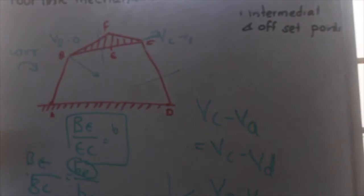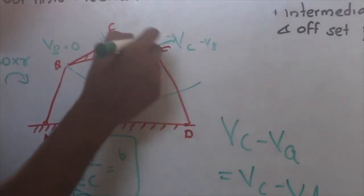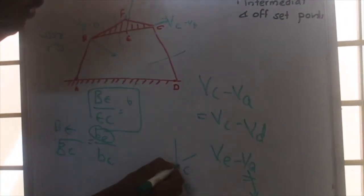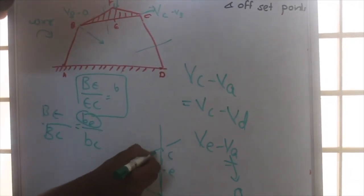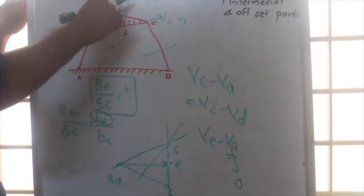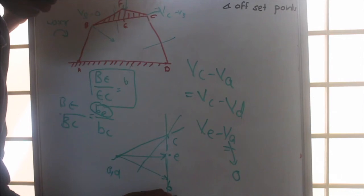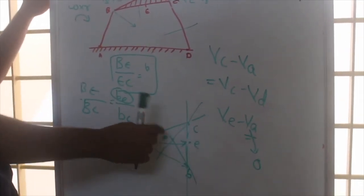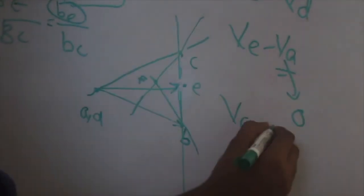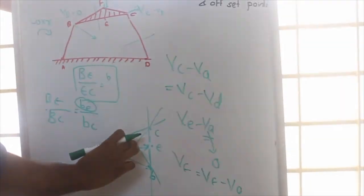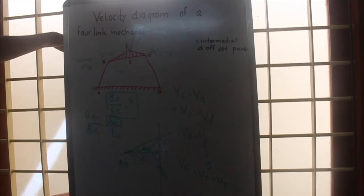To find point F, the velocity of F will be perpendicular to CF and will pass through c in the velocity diagram, so from c we draw a line perpendicular to CF. Similarly, considering link BF, the velocity of F will be perpendicular to BF and will pass through b, so we draw a line perpendicular to BF through b. These two lines intersect at point f. The velocity of F equals VF minus VA, so joining the origin to f gives the actual velocity of F. This is how we draw the velocity diagram and find the corresponding velocities of all points in the mechanism.